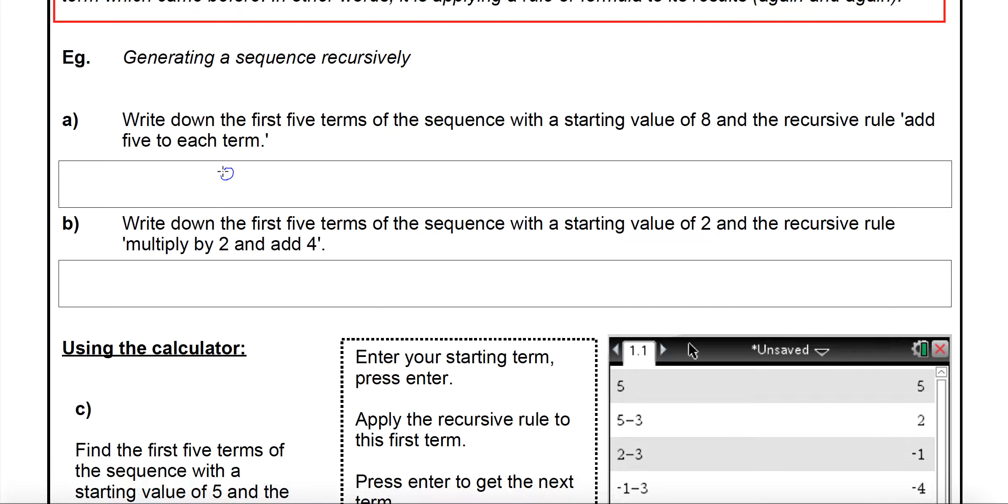It says here write down the first five terms of the sequence with a start value of 8, and our recursive rule means add 5 to get each term. So I'll add 5 onto 8 giving me 13, add another 5 to the 13 giving me 18, then 23 and then 28. There's my five terms. To get the 13 I had to add 5 to the term that came before it.